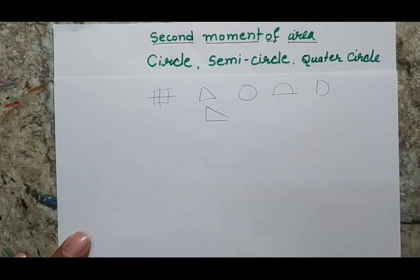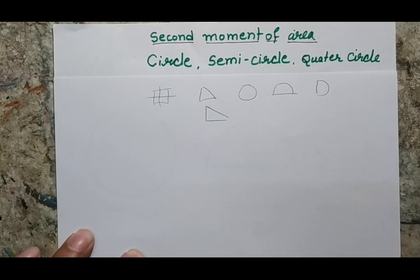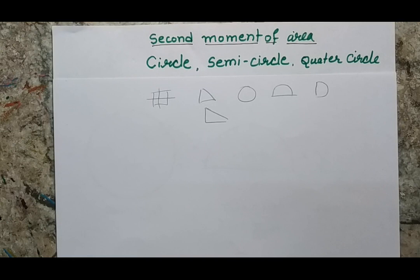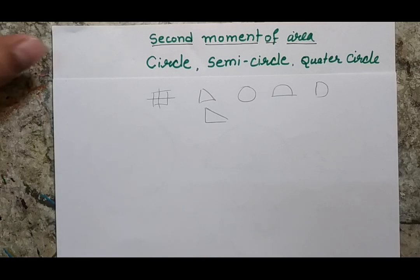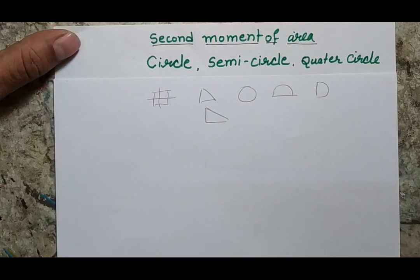In this session, I would like to give a brief about the moment of area of the circle, semicircle, and quadricircle sections — because I feel we should know how we derive the formula of semicircle and quadricircle from a circular body. I believe that if you go through this session, you will definitely find it very interesting and useful.